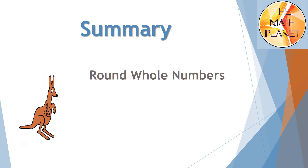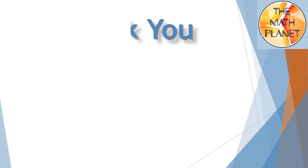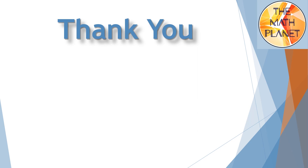To sum up today's lesson: we learned how to round whole numbers using a number line. If your number is closer to the lower benchmark, round down to the lesser number. If your number is closer to the upper benchmark, round up to the greater number. If your number is exactly at the halfway number, also round up to the greater number. This is the end of today's lesson — thanks for watching, please subscribe for more videos, see you later, bye!